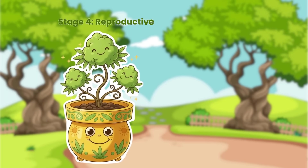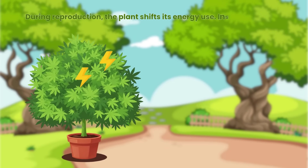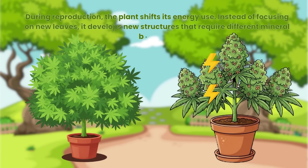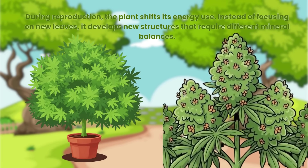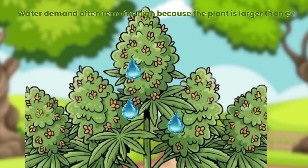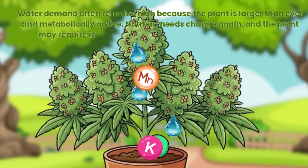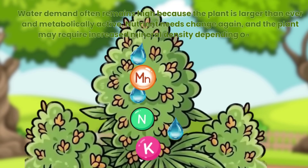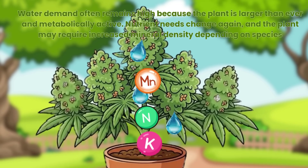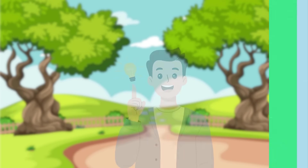Stage 4 — Reproductive/Flowering Phase. During reproduction, the plant shifts its energy use. Instead of focusing on new leaves, it develops new structures that require different mineral balances. Water demand often remains high because the plant is larger than ever and metabolically active. Nutrient needs change again, and the plant may require increased mineral density depending on species. Measurement becomes more important than ever to maintain stability.